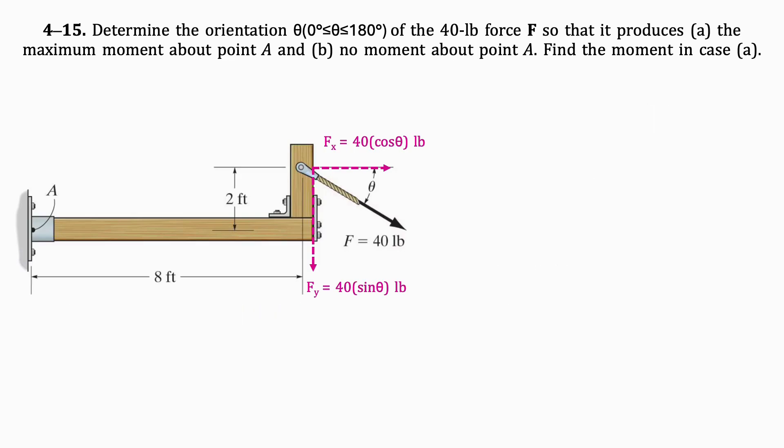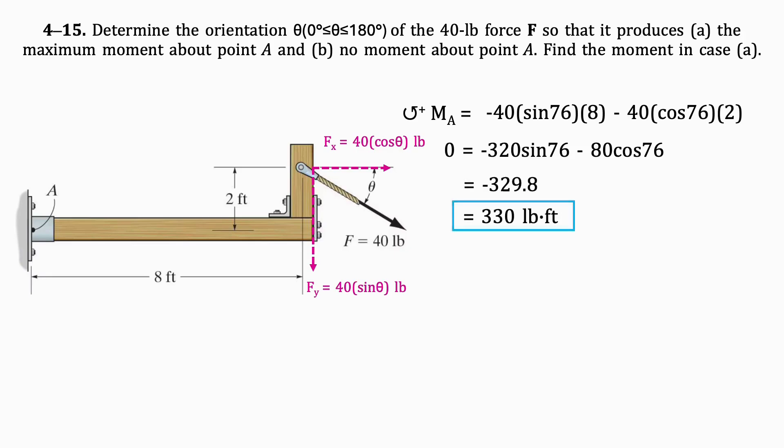Knowing the angle, we can find the maximum moment generated. Using the equation we previously defined and substituting theta for 76 degrees, we get that the maximum moment about point A is 300 pounds per foot.